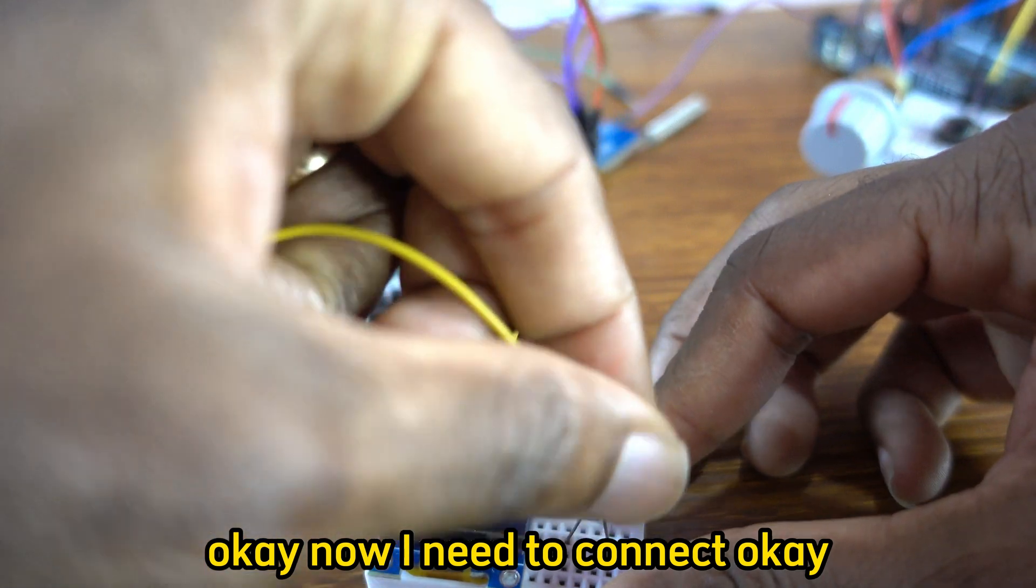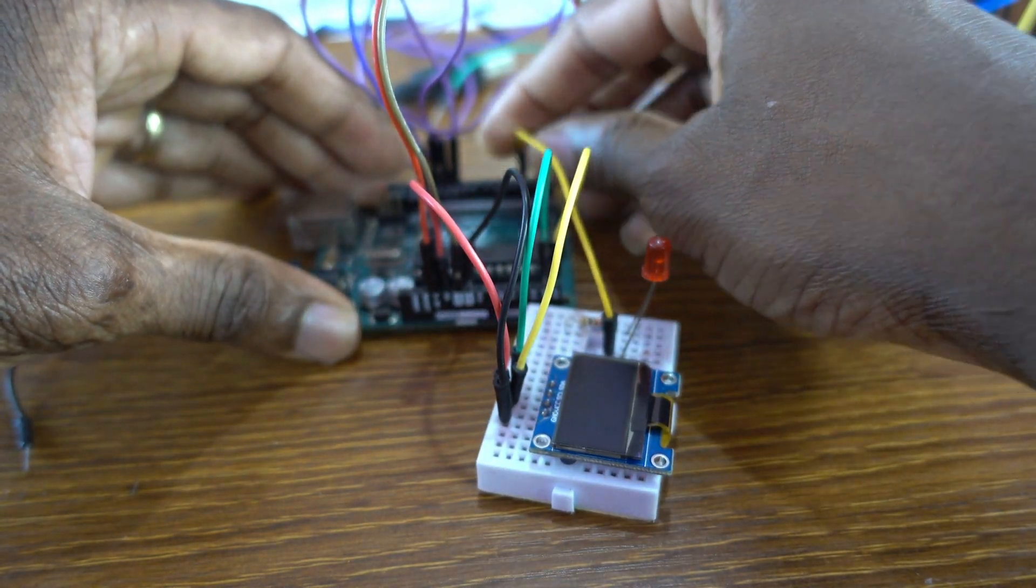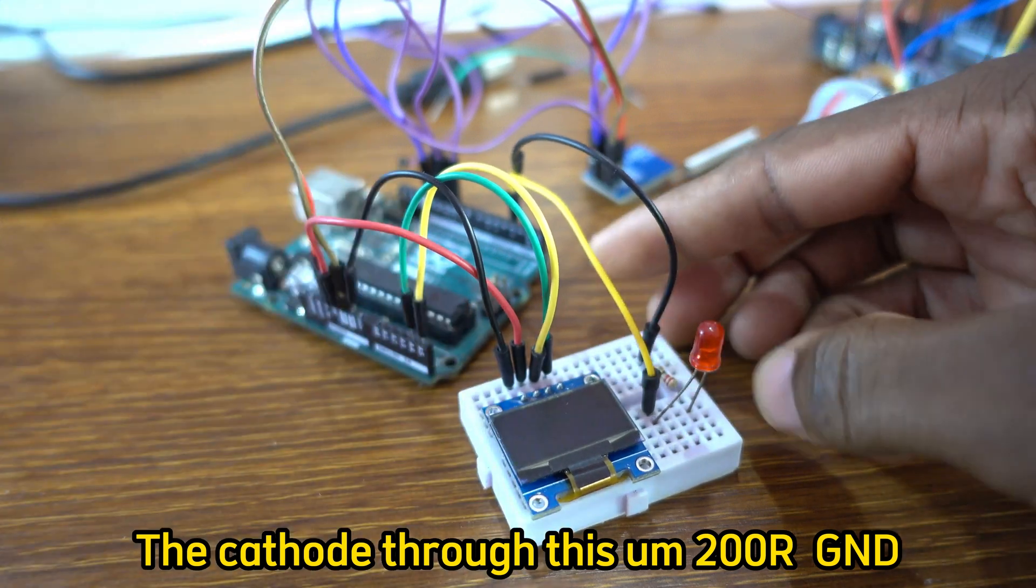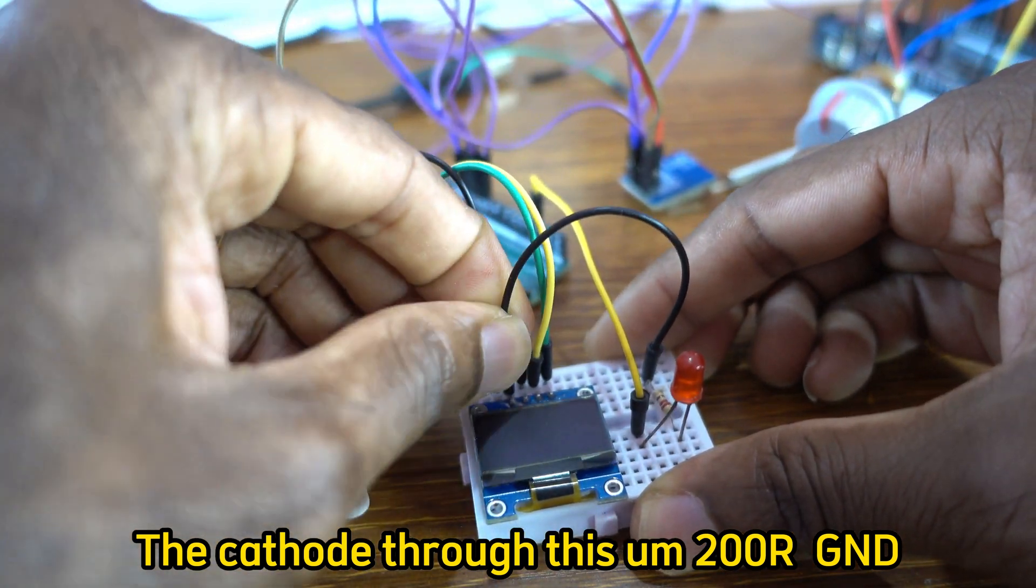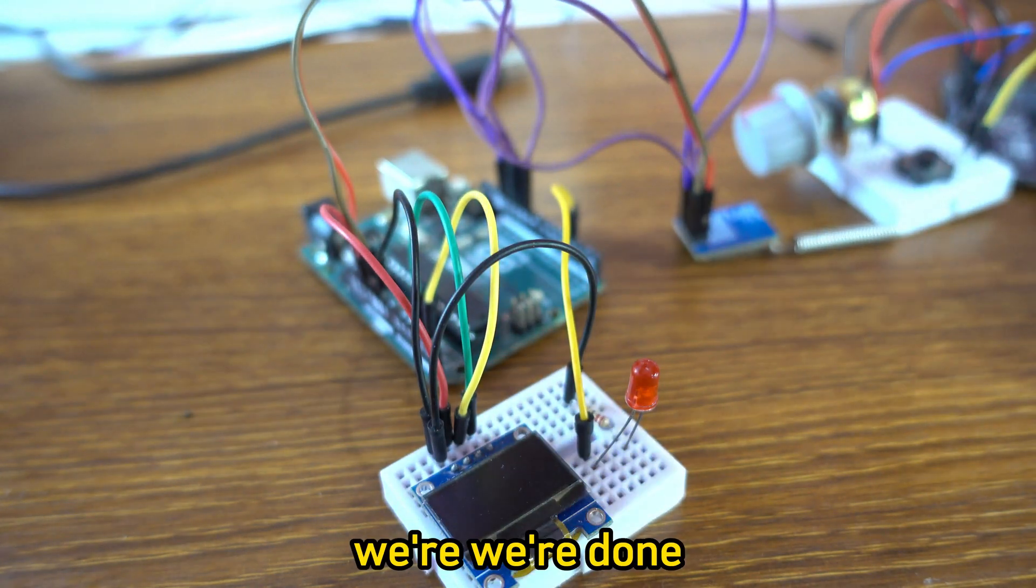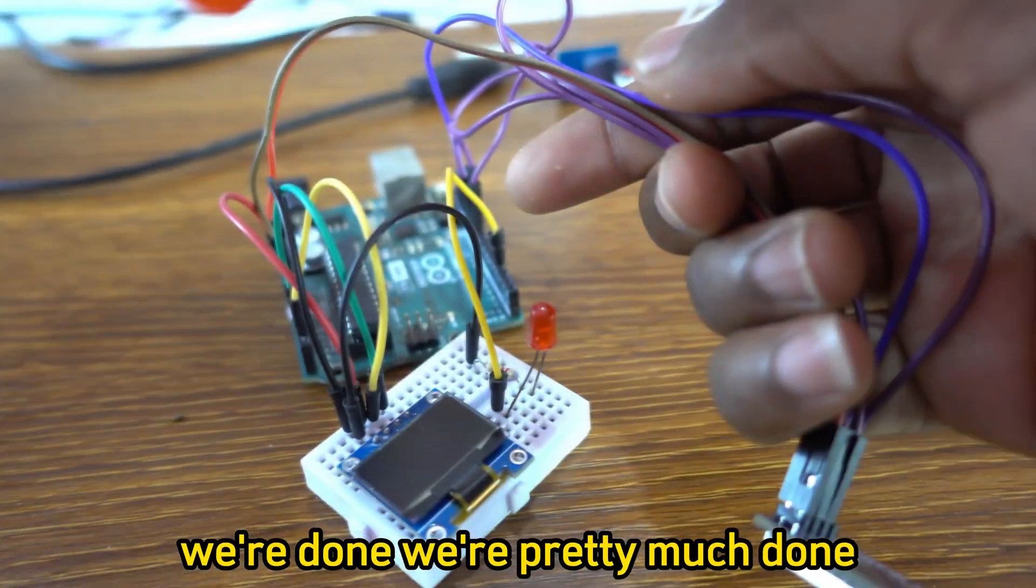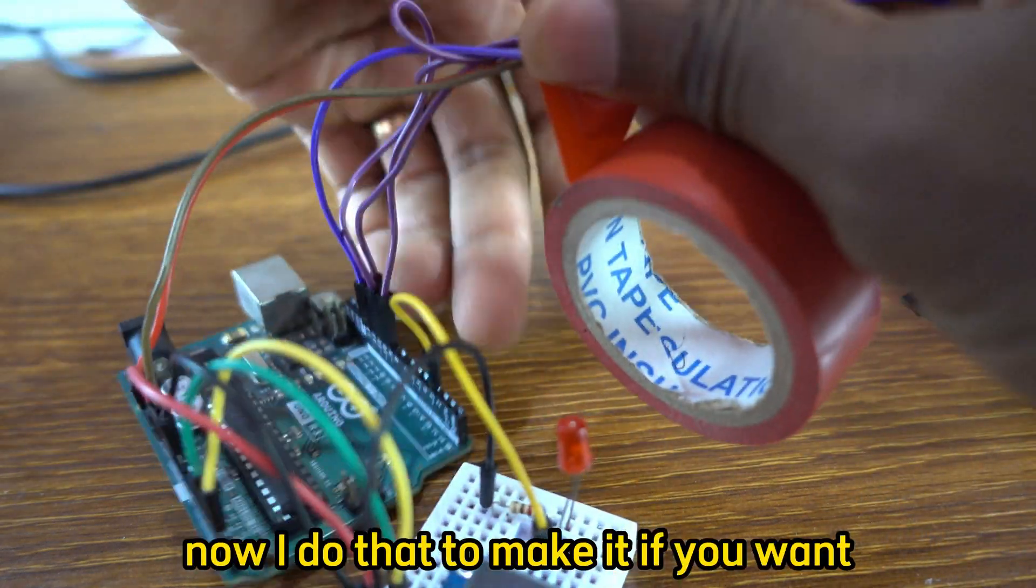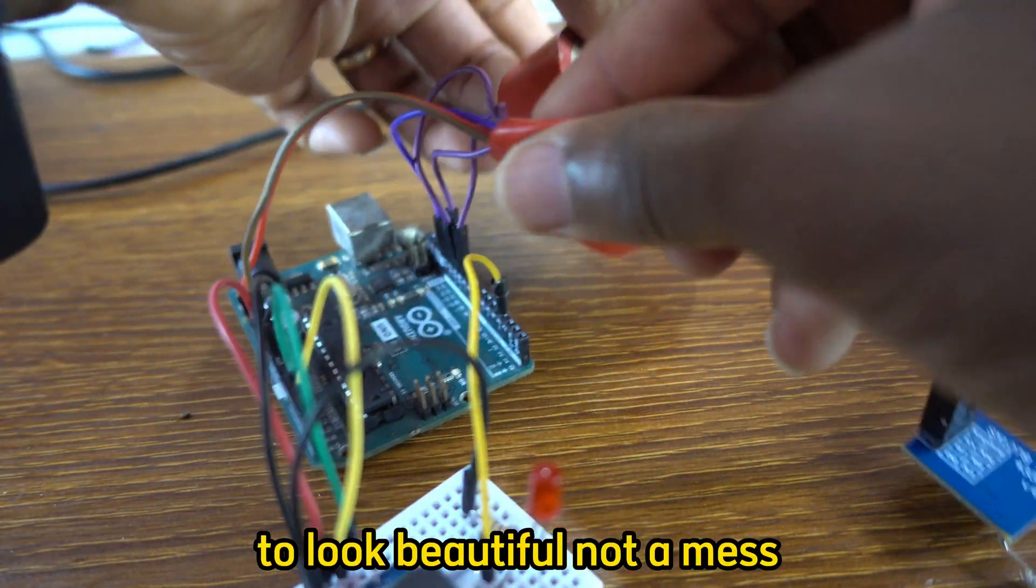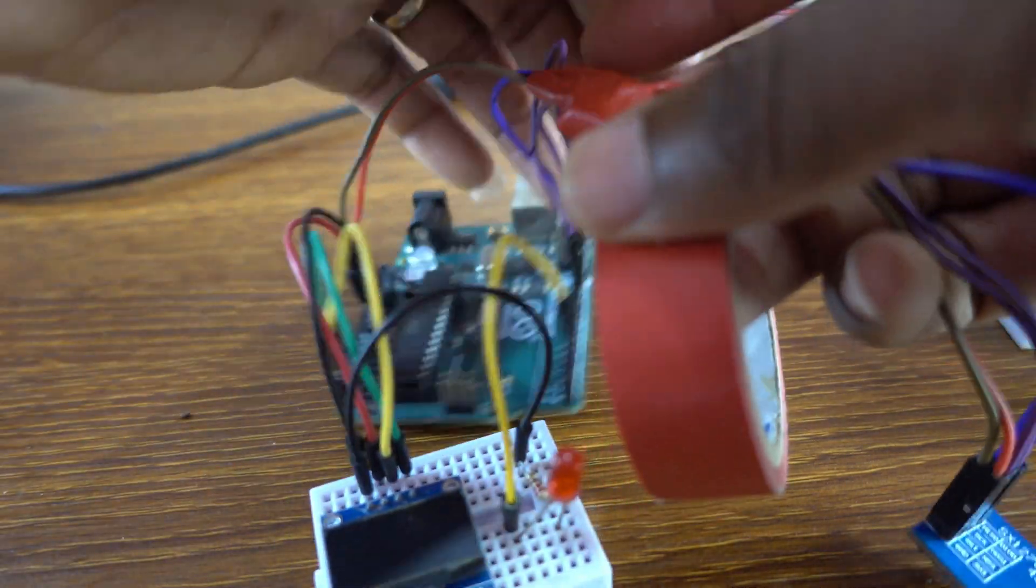Now I need to connect the LED to the Arduino board pin 3, pin 3, and the cathode through this 200 ohm resistor to ground. We're done, we're pretty much done. Now I do that to make it look beautiful, not a mess. You can do that too.